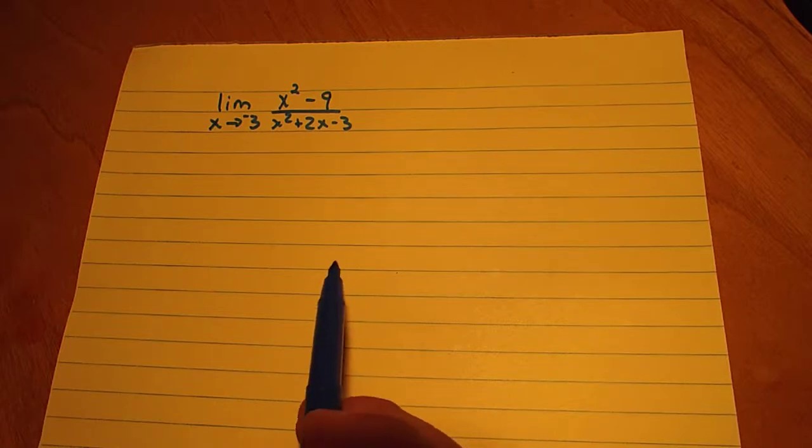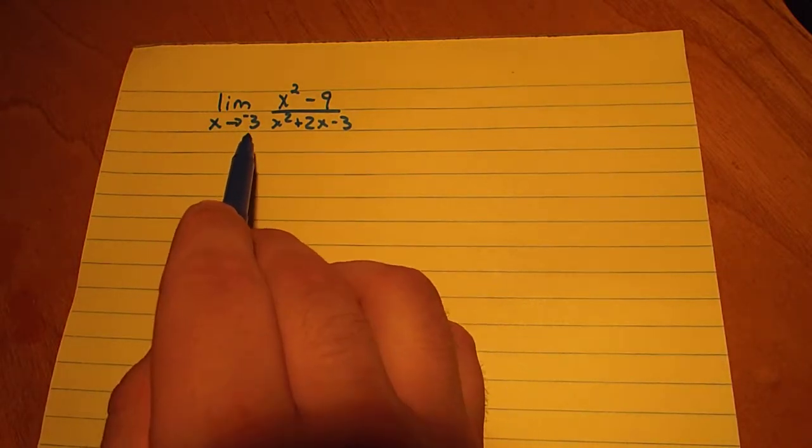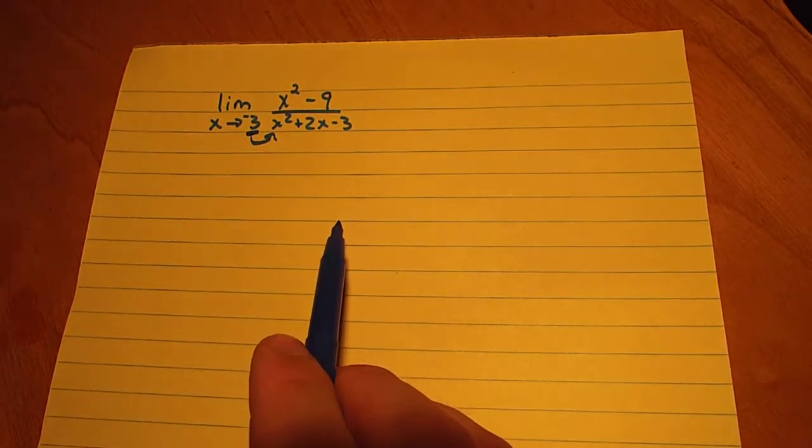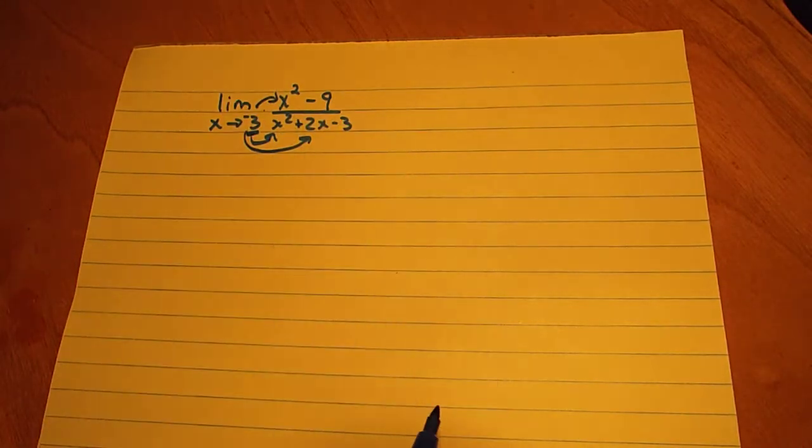Now what we know about limits is that often times we can try as a starter direct substitution, which means we can put in negative 3 into our x values and try and see if we can get our limit that way.